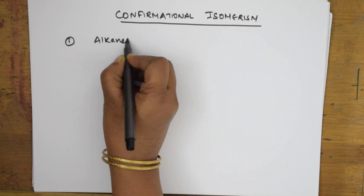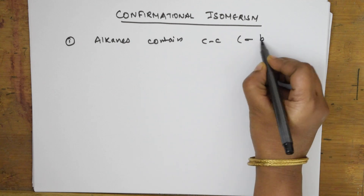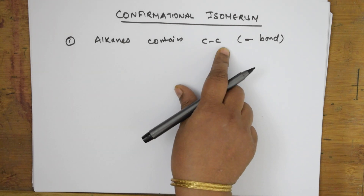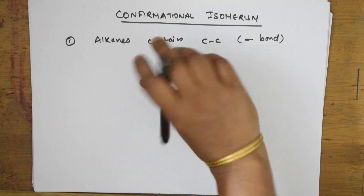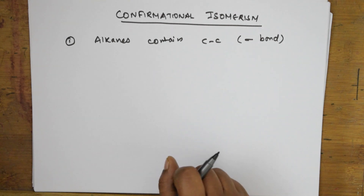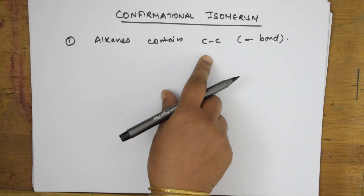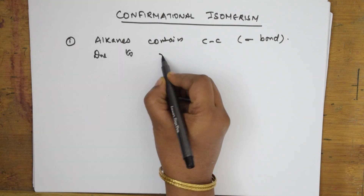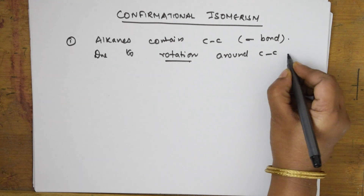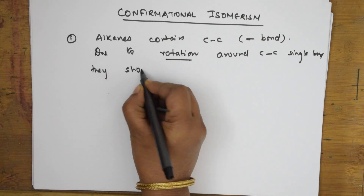This carbon-carbon single bond is a sigma bond, and this is where the whole concept lies. Because of this C–C single bond, alkanes show rotation around this single bond. Due to this rotation, they are going to show an infinite number of conformations. The main point is: due to rotation around the carbon-carbon single bond, they show infinite number of conformations.